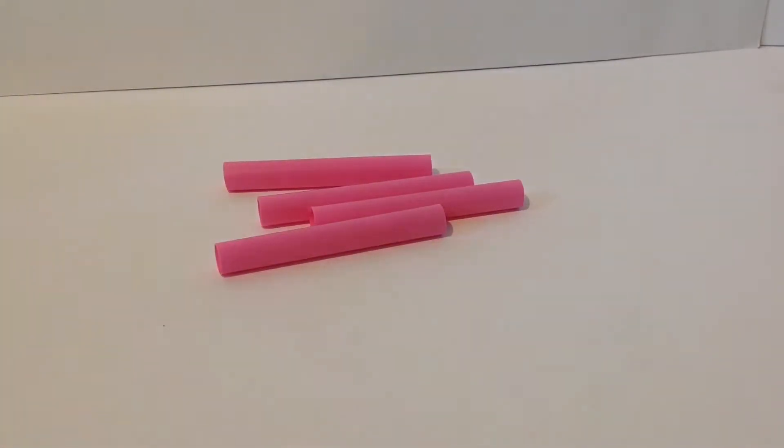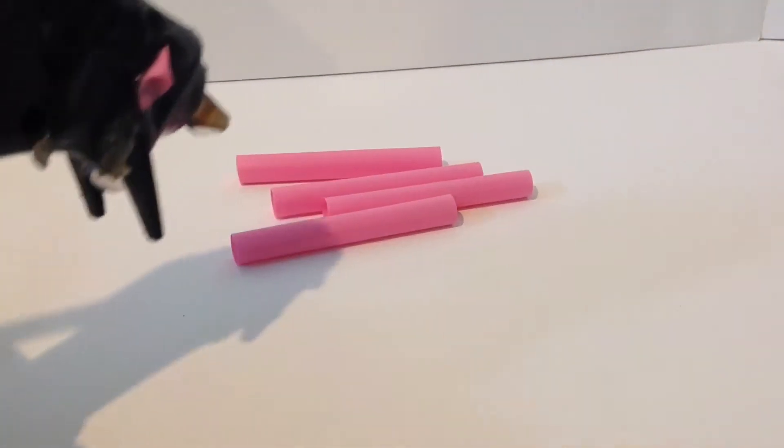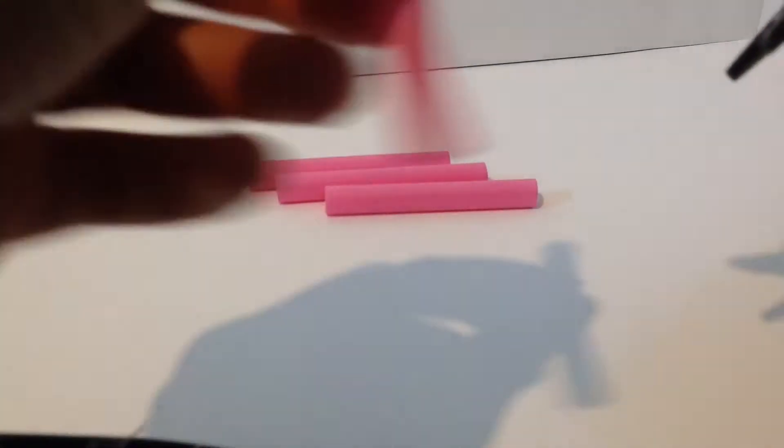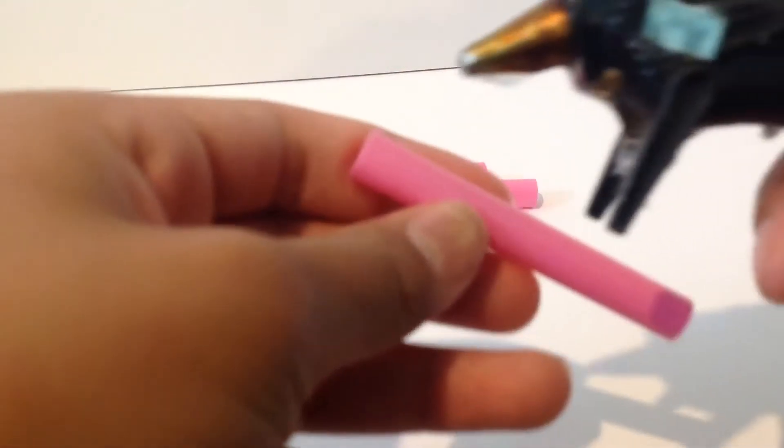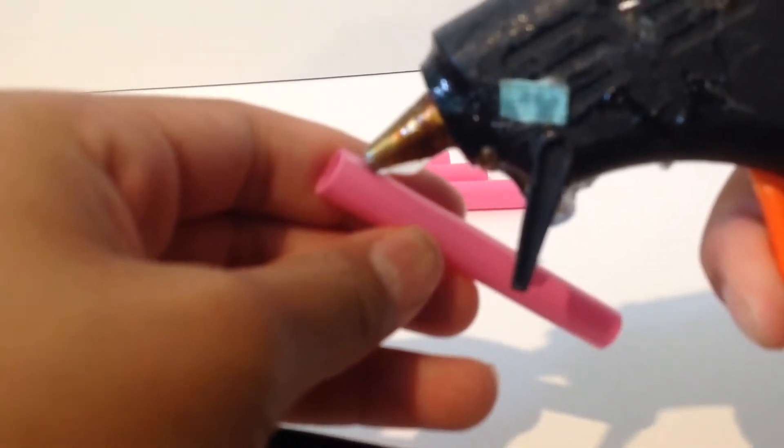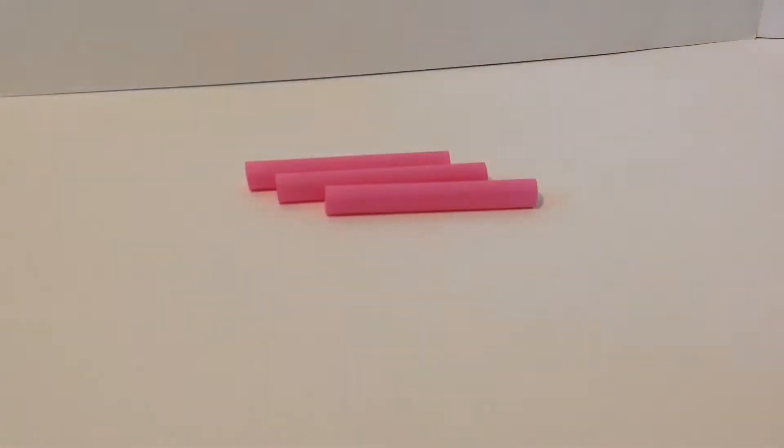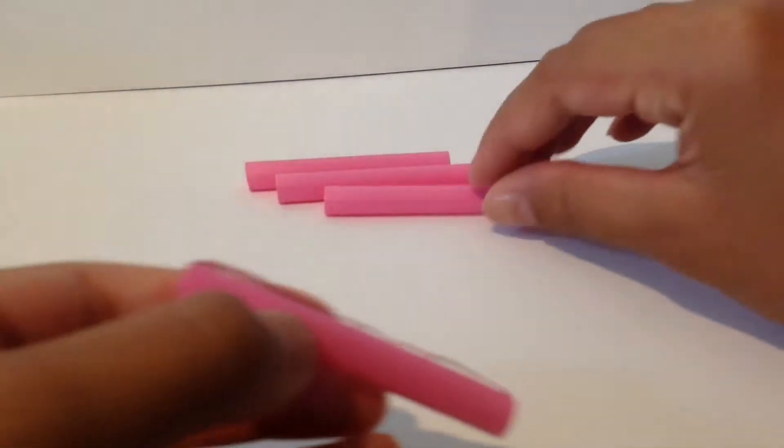Now we're going to take the hot glue gun and glue these pieces together. Make sure you have adult supervision. I'm going to glue the hot glue on the side of the straws, then take this straw and put it on.